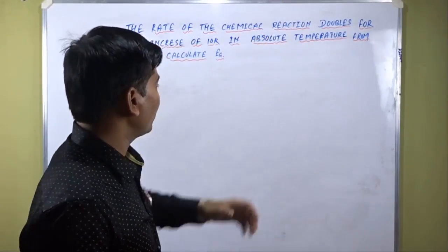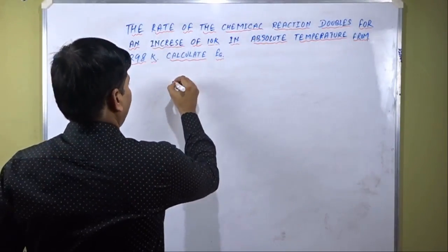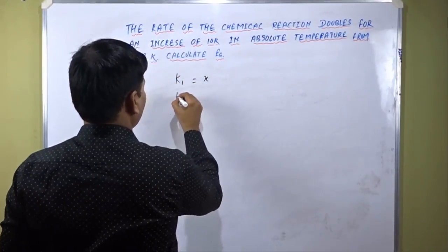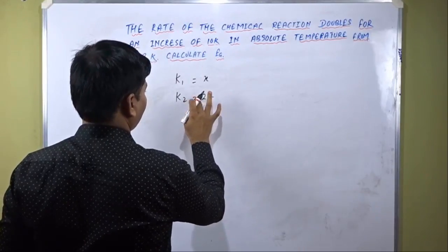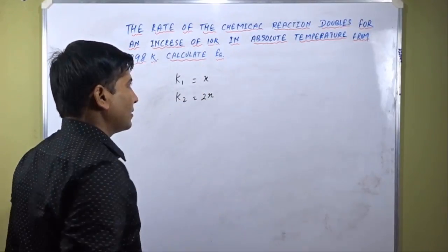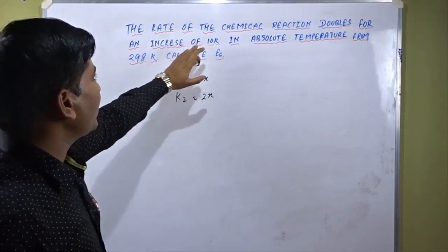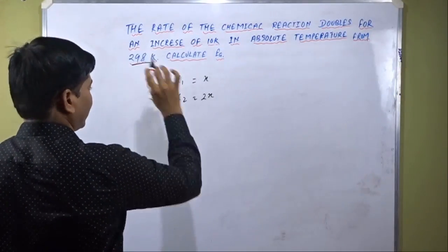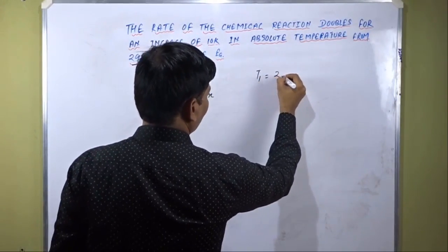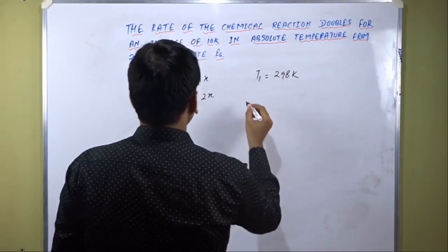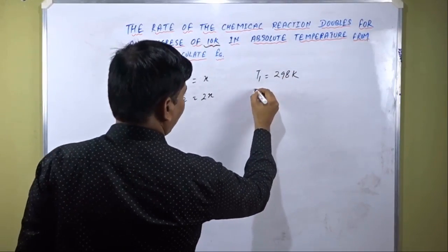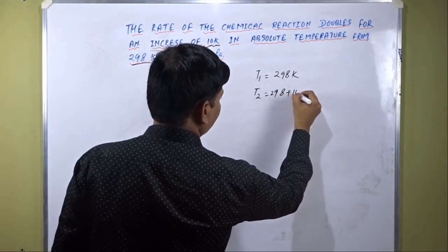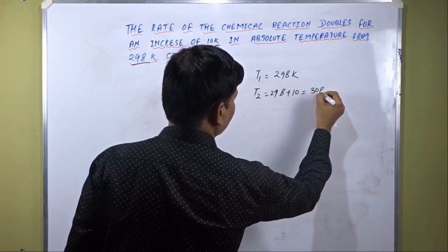The rate of chemical reaction doubles. We assume that the initial rate is x, and when it doubles the final rate will be 2x. There is an increase of 10K in absolute temperature from 298K, so the initial temperature is 298K, and since there is an increase of 10K, the final temperature will be 298 plus 10, equal to 308K.